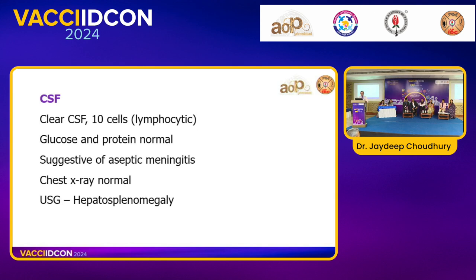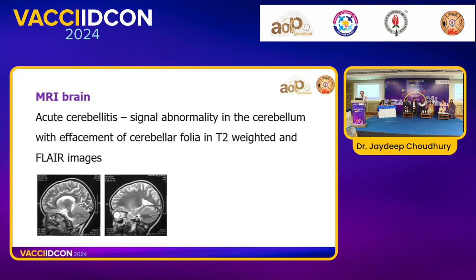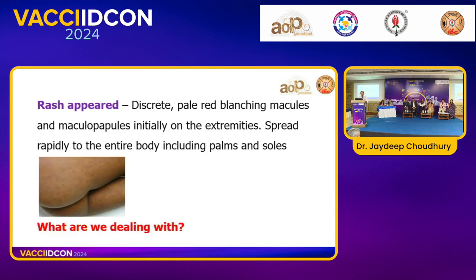CSF was done — 10 cells, lymphocytic, glucose and protein normal, suggesting aseptic meningitis. Chest X-ray and ultrasound showed hepatosplenomegaly only. MRI brain showed acute cerebritis with signal abnormality on FLAIR T2 images. As the days progressed, a rash appeared — discrete, pale-red, blanching macules and maculopapules initially on the extremities, then spreading rapidly to the entire body including palms and soles.